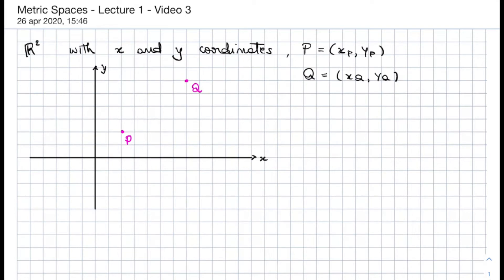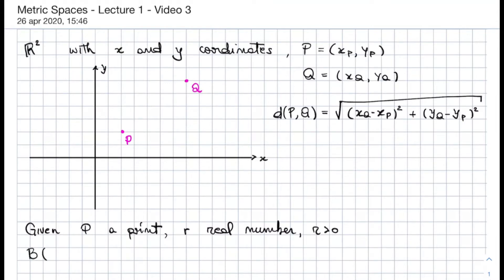Then we said that the distance between p and q, one of the two distances we defined, is given by the square root of (xq minus xp) squared plus (yq minus yp) squared. And then we said that given any point p, and a number r which is positive, then we can define the ball centered at p of radius r, to be the set of points in the plane q, such that the distance between p and q is at most r.